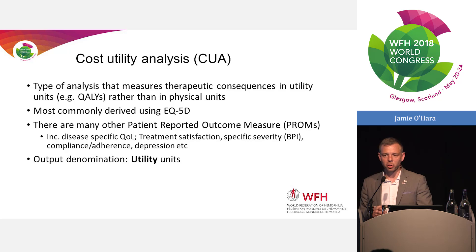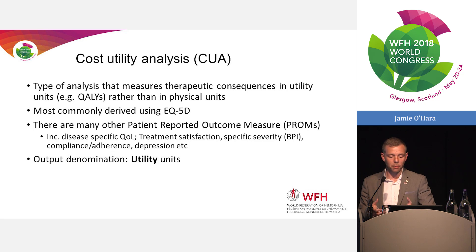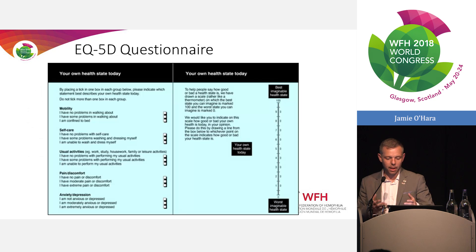We also have cost utility analysis, which Mark touched on earlier. Instead of looking at natural units within the disease area, there is a common denomination, which is usually QALYs - quality-adjusted life years - derived most commonly via the EQ5D questionnaire. This gives us a quality of life measure across all diseases, which gives us the ability to look at the relative benefits across different disease areas. I'm sure everybody's seen the questionnaire before.